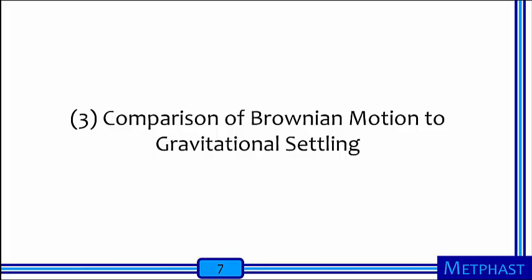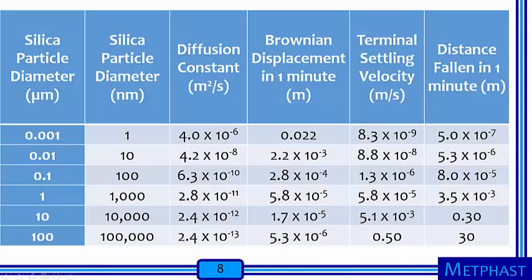The third and last section of this activity compares Brownian motion to gravitational settling. This table shows the diffusion constant, the displacement due to Brownian motion in one minute, the terminal settling velocity due to gravity, and the distance fallen in one minute under gravity for airborne silica particles ranging from 0.001 to 100 micrometers in diameter.